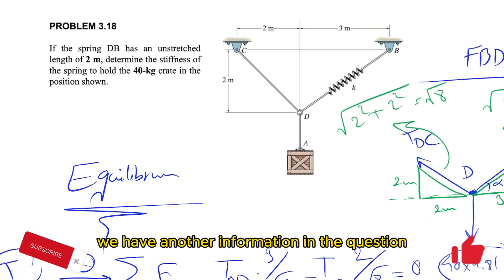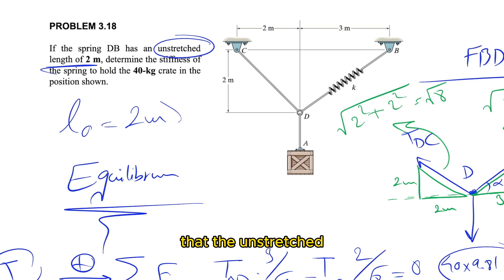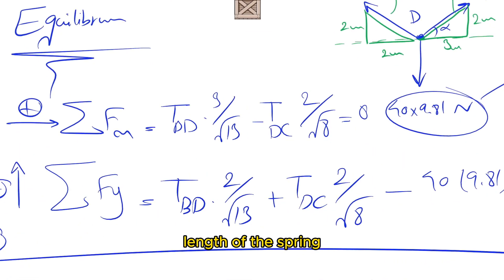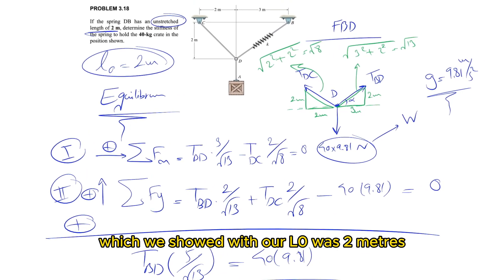Based on this, we have information from the question that the unstretched length of the spring, L_0, was 2 meters.